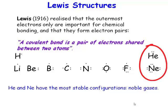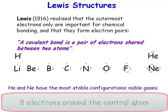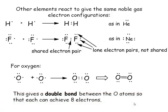The octet rule is this drive to achieve a full valence shell corresponding to eight electrons around the central atom. There is a driving force for this to occur.